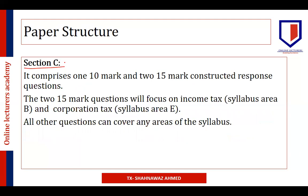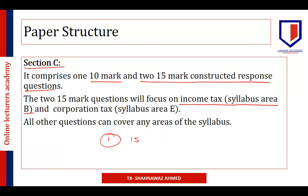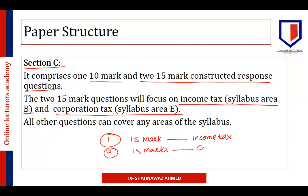Section C is the constructive response question section. There are three questions: one 10-mark question and two 15-mark questions. One 15-mark question is always on income tax and the other is always on corporation tax. So we know the 30 marks in Section C comprise income tax and corporation tax. The remaining 10-mark question can be created from the entire syllabus, so it would be on other topics.